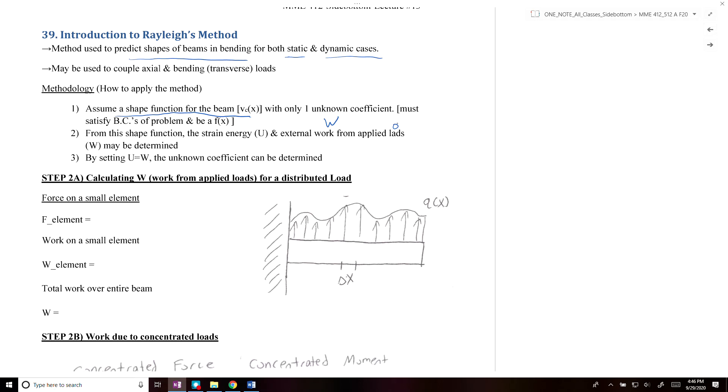To solve this problem, once you have Vc(x), you need to calculate the work due to distributed loads. In certain cases you might have distributed loads; in other cases you may have concentrated forces or moments. If you have a very small element, the force on that element is q(x) times delta x. The work on that element is 1/2 times q(x) delta x, and the total work over the beam is the integral of that term.